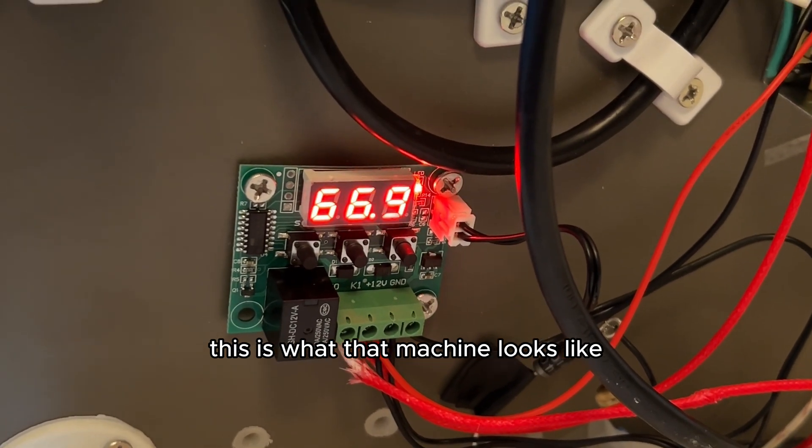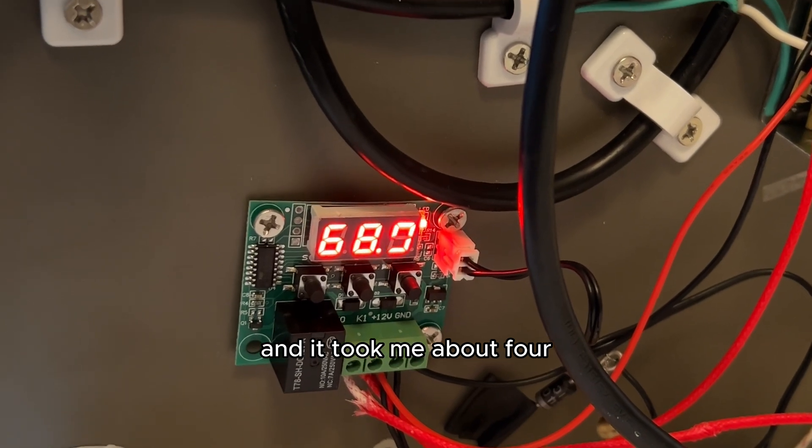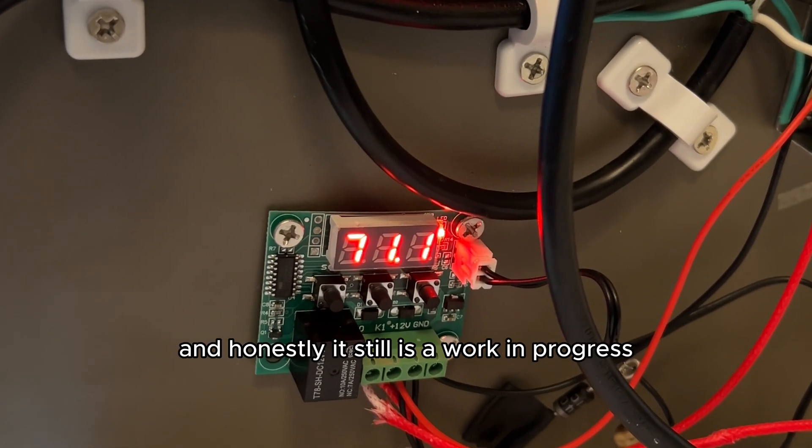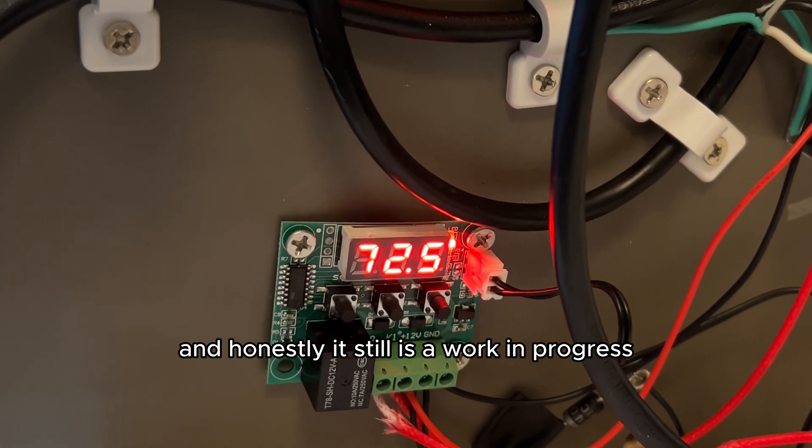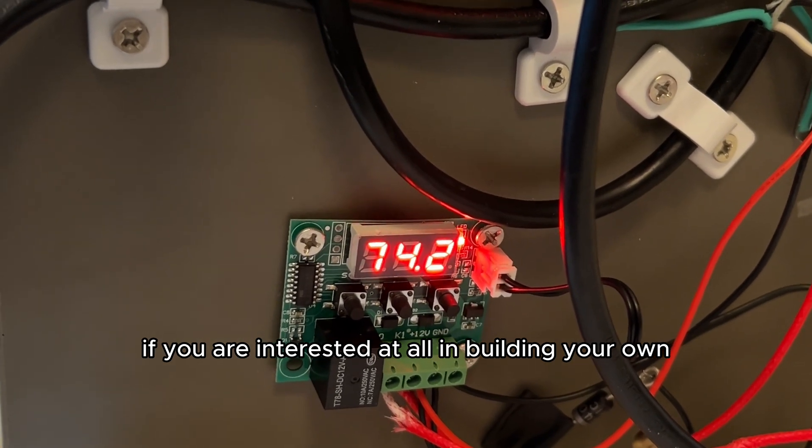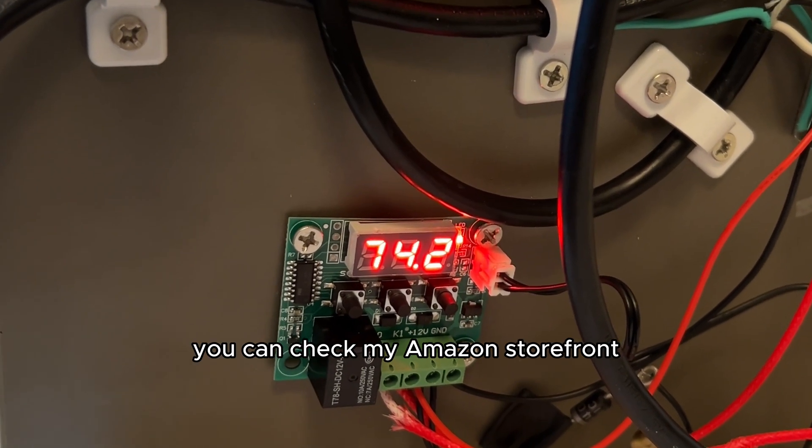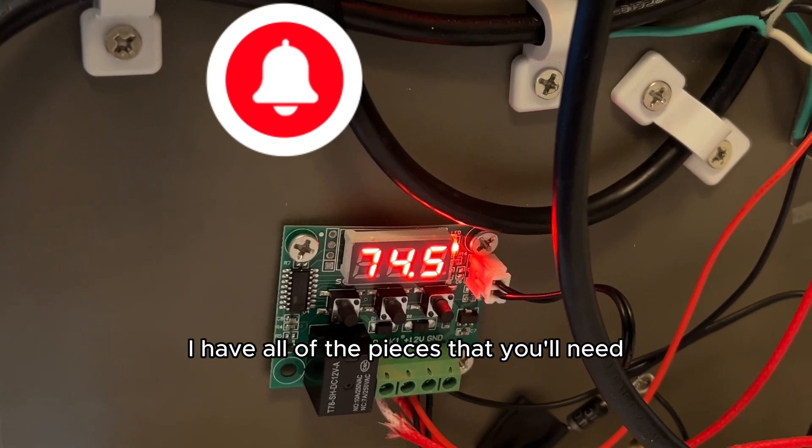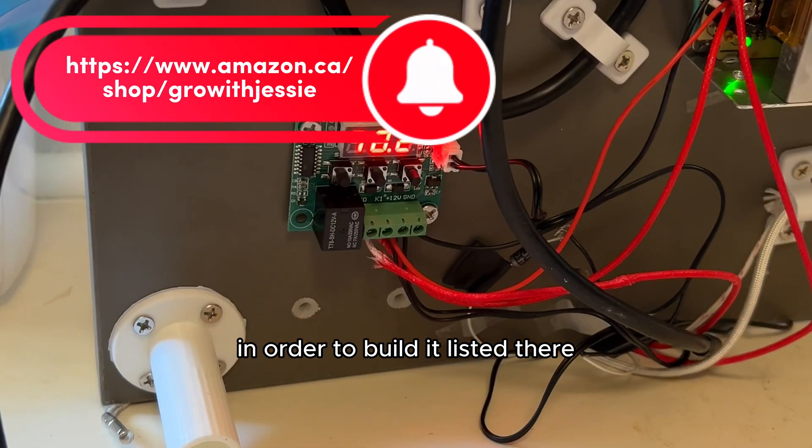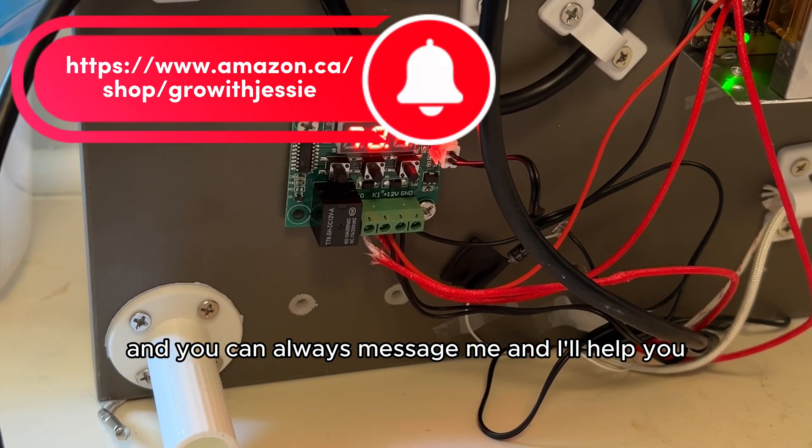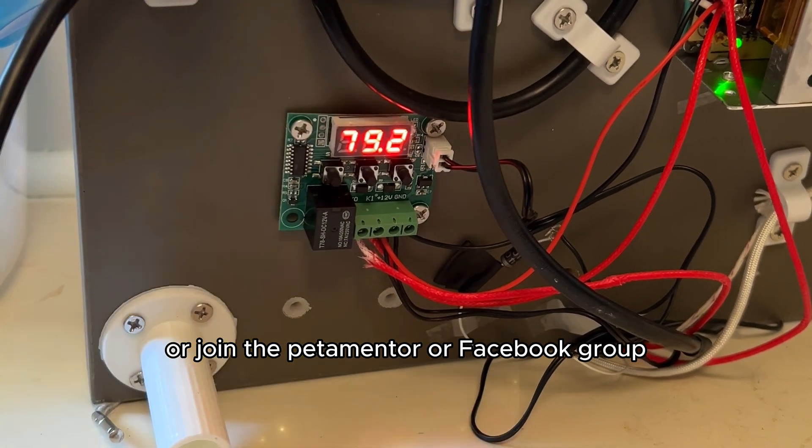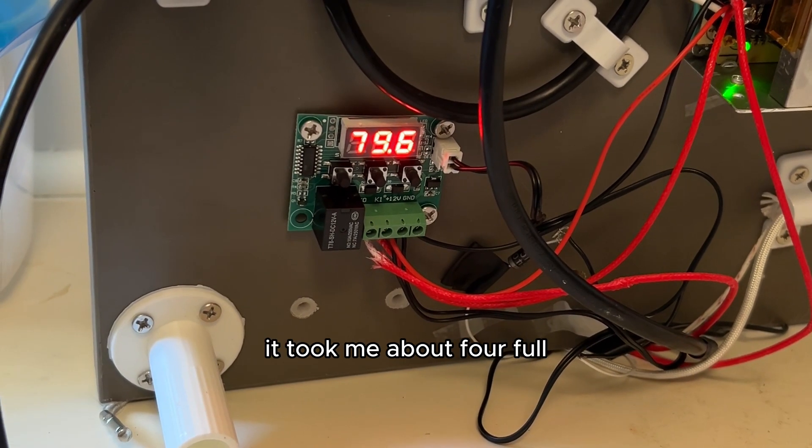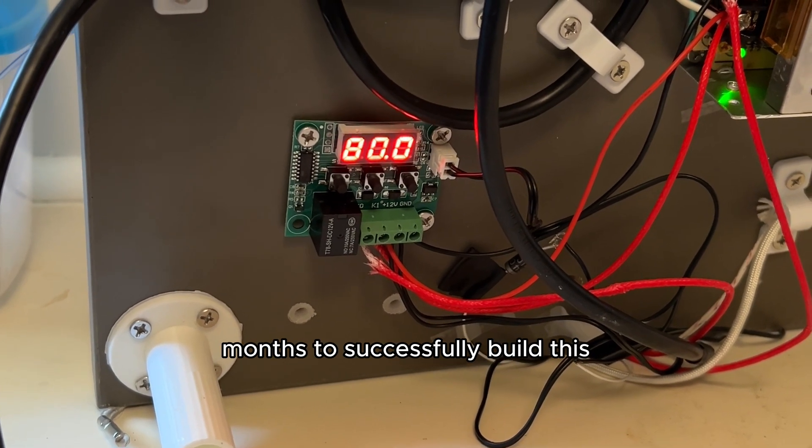This is what that machine looks like and it took me about four months to successfully build it and get it working, and honestly it still is a work in progress. If you are interested at all in building your own and trying this at home you can check my Amazon storefront. I have all of the pieces that you'll need in order to build it listed there, and you can always message me and I'll help you or join the Petamentor Facebook group.